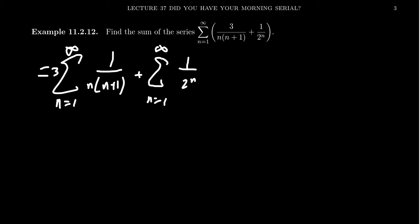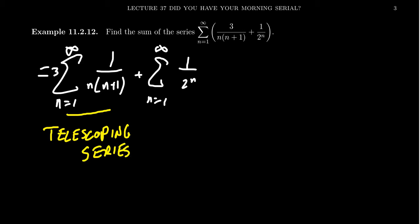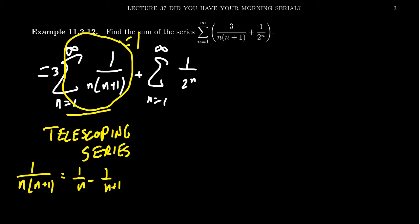This first series is an example of a telescoping series that we've actually considered in a previous video. For this telescoping series, you take 1 over n(n+1) and break it up into 1 over n minus 1 over n+1. When you do that, this series turns out to equal 1 — we computed this previously. The second series is an example of a geometric series, likewise considered in a previous video.